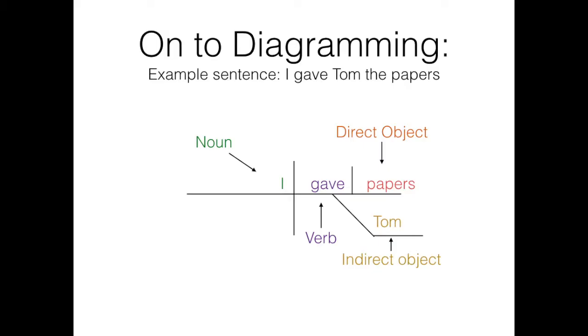The only other word in the sentence is the, and in the last video I mentioned how the is an adjective. In this example, it's describing papers, so we'll diagram it as an adjective describing papers, which looks like this.